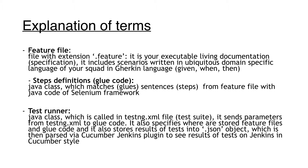There are three key terms in Cucumber. The first is the feature file — it has a .feature extension, it is the test itself written in Gherkin, and it includes one or more scenarios. You write steps with keywords Given, When, and Then. The second is glue code or step definitions — it is a Java class that matches or glues sentences from the feature file with the rest of the Java Selenium framework using regular expressions.